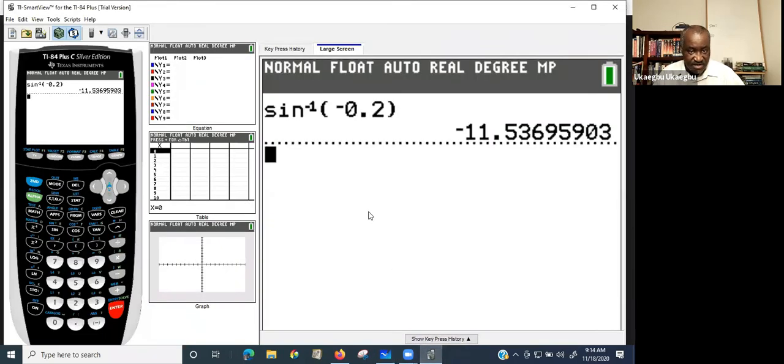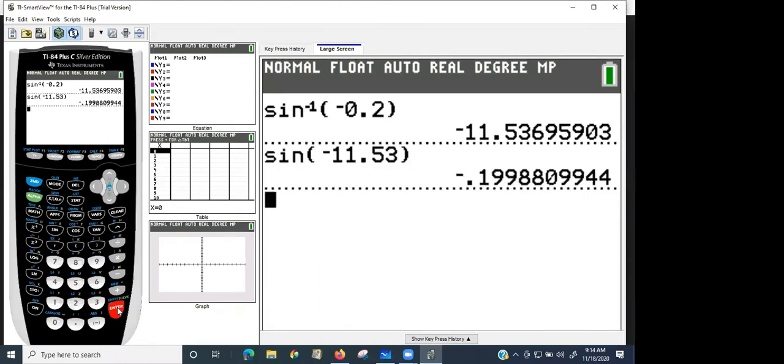You come back with your calculator, and then just press sign, sign directly. And then, you enter negative 11.53, and you close the parenthesis, and you hit enter. Boom.